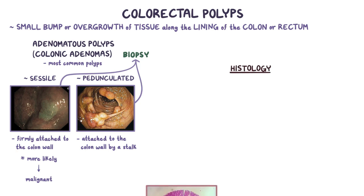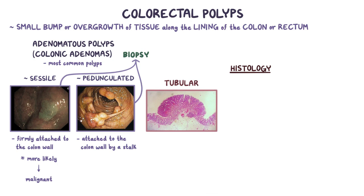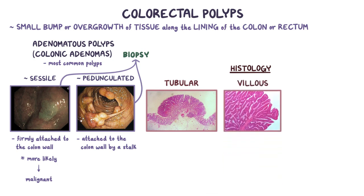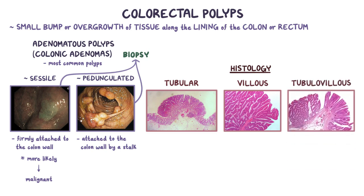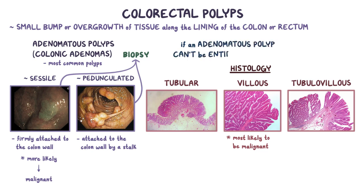On histology, polyps can be tubular, where the growth has little holes within it on a cross section, or villous, where it looks like a little tree, or tubulovillous, where it's a mix between the two. Among these, villous polyps are the most likely to be malignant. If an adenomatous polyp can't be entirely removed using the colonoscopy, then surgical resection may be needed, especially if it's a polyp with high risk for malignancy, like a sessile polyp.